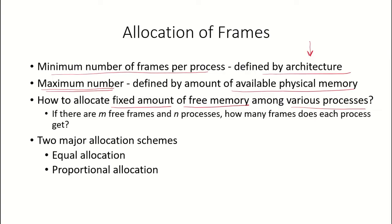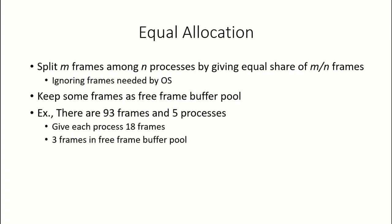Each process has a requirement for a minimum number of frames. So how do we allocate a fixed number of free frames amongst various processes? Assuming there are M free frames and N processes, each with some requirement, there are two major frame allocation schemes: equal allocation and proportional allocation. In equal allocation, the total M free frames are divided equally among N processes, so each process gets M divided by N frames.